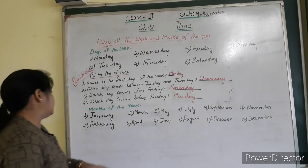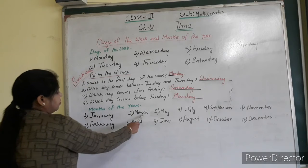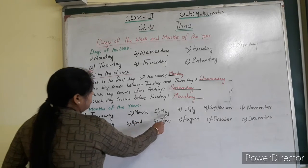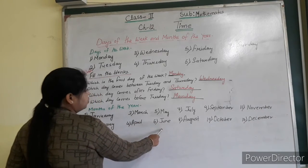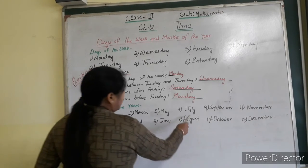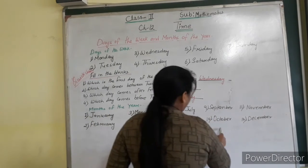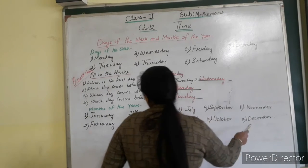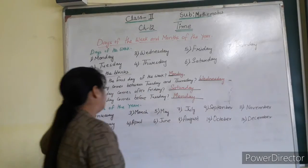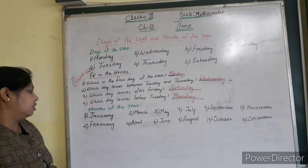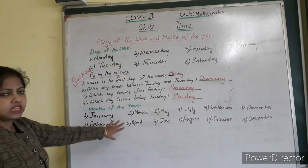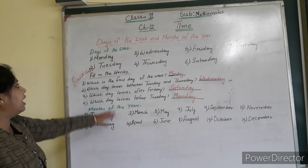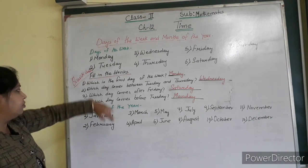Let me recap: the first is January, then February, March, April, May, June, July, August, September, October, November, December. You shall learn the names of the months and the week.